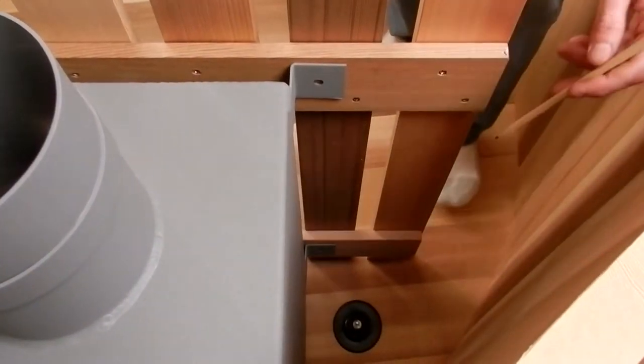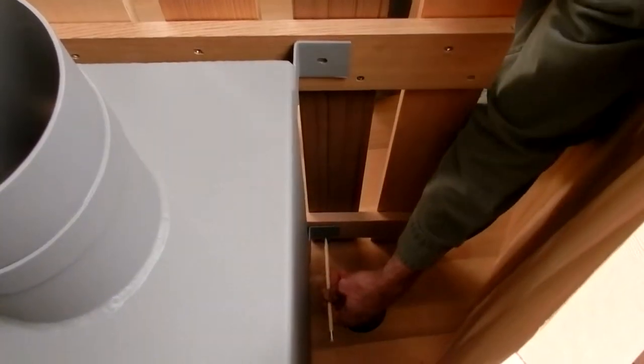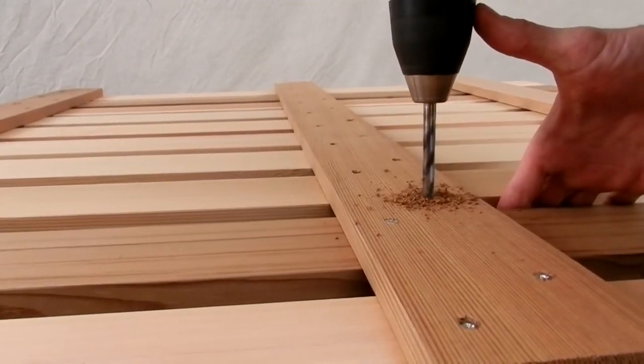use a pencil to draw a circle through the bracket holes on the backside of the fence and drill the 3 eighths inch hole in the marked location.